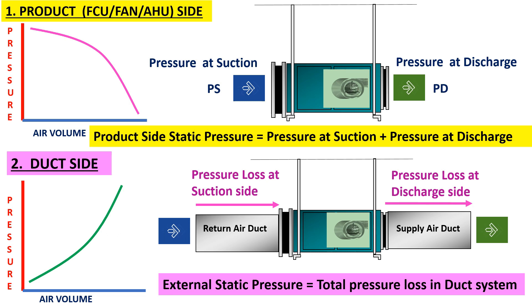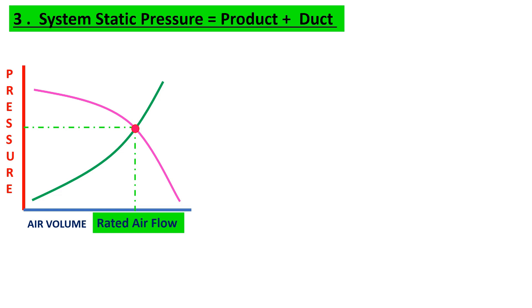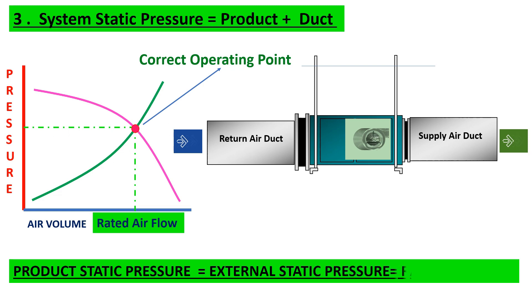Duct static pressure equals pressure losses at the suction side ductwork plus pressure losses at the discharge side ductwork, which equals total pressure losses in the ductwork. Third, system static pressure equals product side static pressure plus duct side static pressure. This system curve shows where the fan static curve and duct static curve meet at the correct operating point, giving the rated airflow. At this point, product static pressure equals external static pressure equals rated airflow.